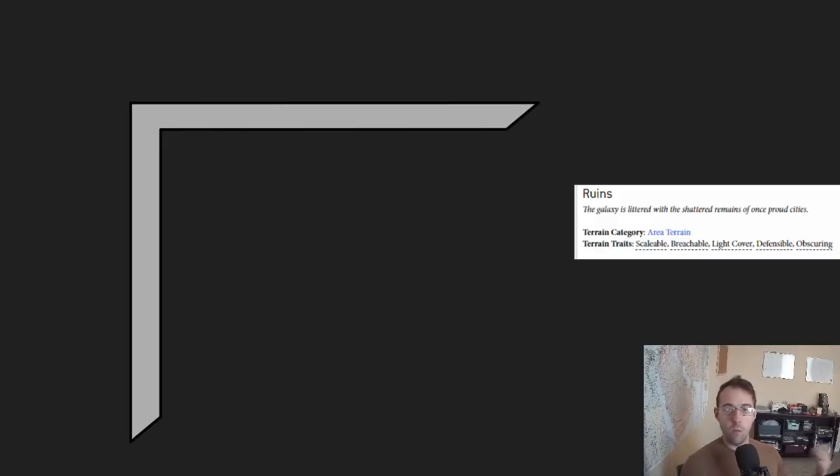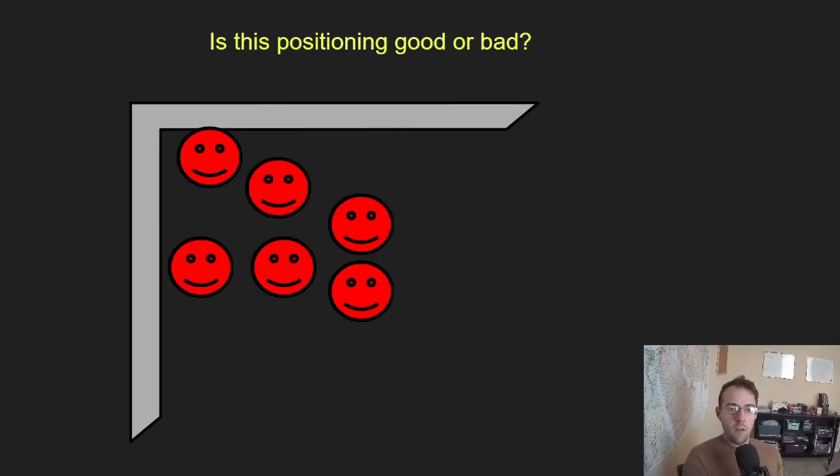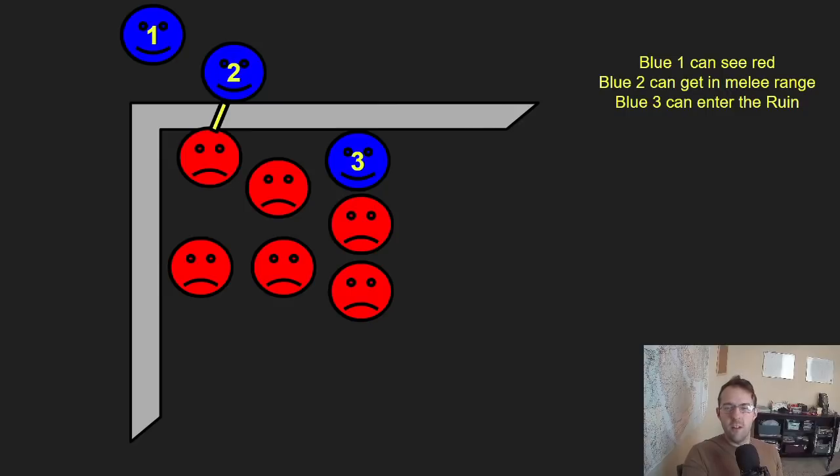These ruins will say that they have little cracks in them and little windows on the first floor. You can see through them if you're in the terrain. Let's say I put a few of my models inside this ruin. Is this positioning good or bad? In my opinion this positioning is actually terrible. Blue one is able to see and shoot red's models. Blue two is able to attack through the ruins because red's models are within one inch of the edge of the terrain. Additionally, there are spaces where blue's models can actually end up inside the ruin and can also make melee attacks against red.